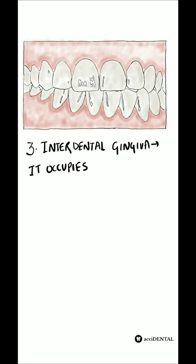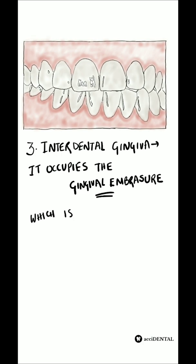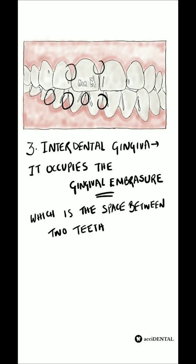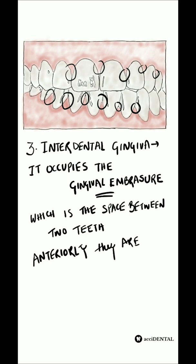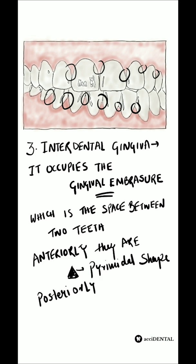Third is the interdental gingiva, also called the interdental papilla, which is present between two adjacent teeth in the gingival embrasure area. The shape of the interdental gingiva varies: anteriorly it is pyramidal, with the tip located immediately beneath the contact point and narrower in shape, while in the posterior teeth it is col-shaped or bridge-shaped.